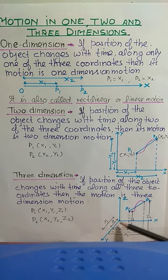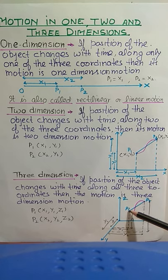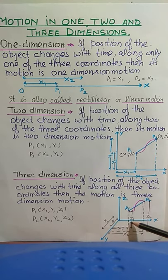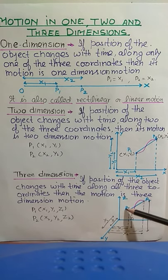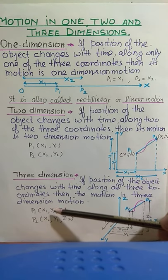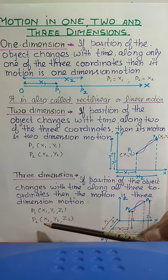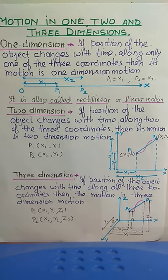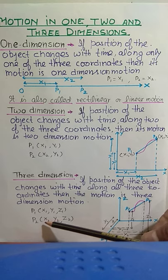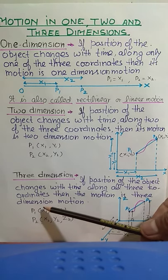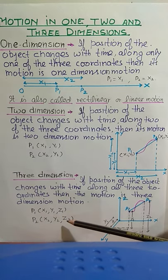In the diagram for three-dimensional motion, P1 is the initial position with coordinates (x1, y1, z1). When the object moves from P1 to P2 in time t, its coordinates become (x2, y2, z2). All three coordinates are changing — x1 changes to x2, y1 to y2, and z1 to z2. This type of motion is three-dimensional motion.